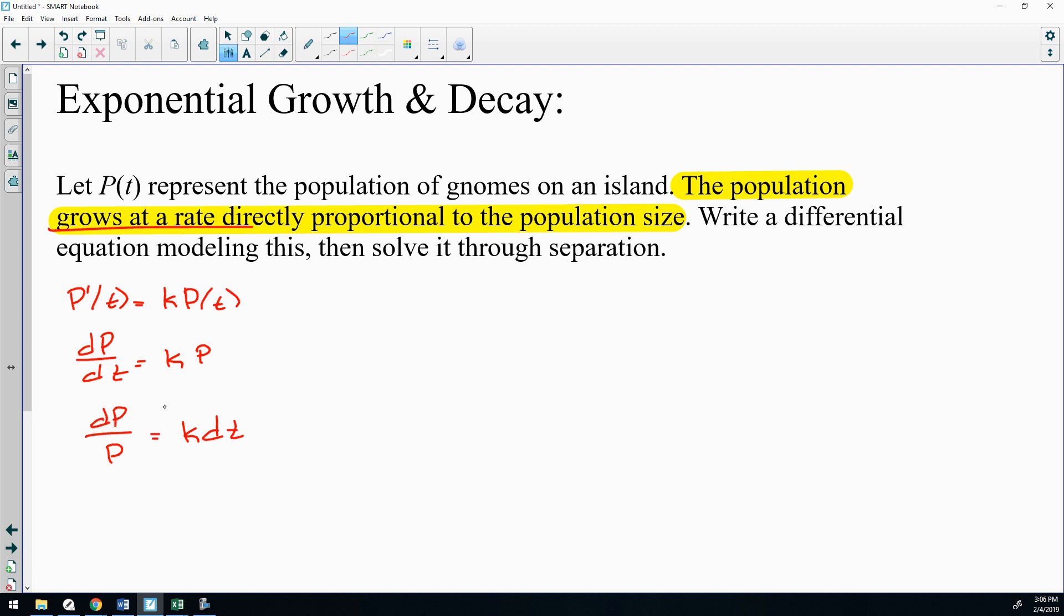You could divide the k over with the P if you want, but that's going to make things a little bit more difficult. Do the antiderivative of both sides real quick, and I'm going to solve this really fast and come right back to it. When you solve and integrate, you end up getting P equals Ae^(kt).